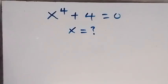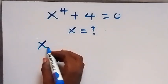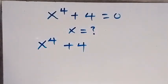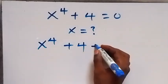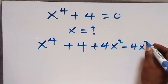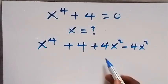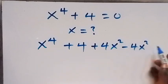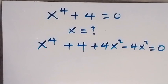Hello, you are welcome. We are solving a nice Olympiad problem where we find the value of x. We are given x⁴ + 4. From here we can add 4x² and also subtract the same thing, minus 4x², so we are still having the same expression on the left because plus 4x² and minus 4x² equals zero.